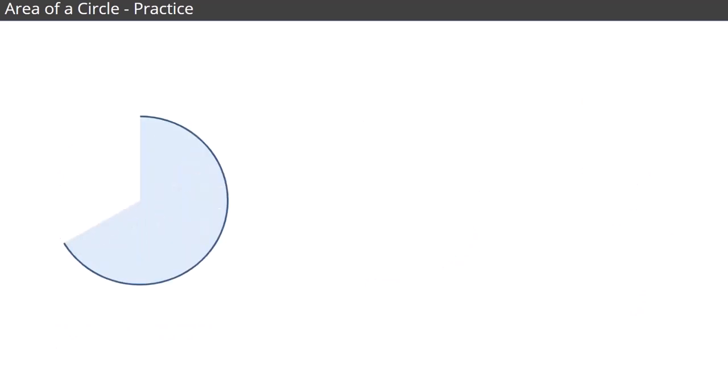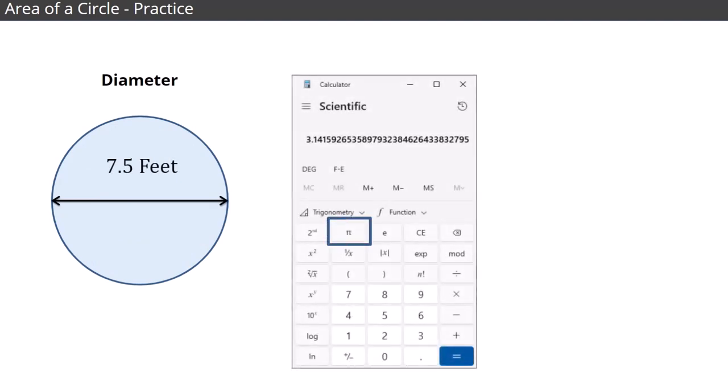Now, let's practice. Find the area of this circle that has a diameter of 7.5 feet. Use the pi key on your calculator and round your final number to the hundredths. Press pause to work through this yourself, and then press play to see the answer.